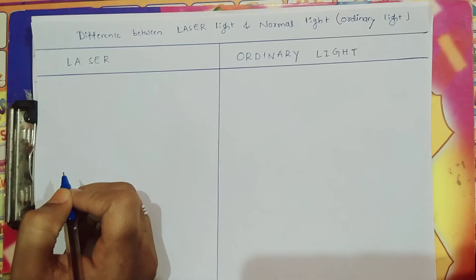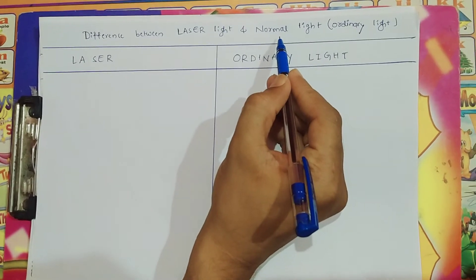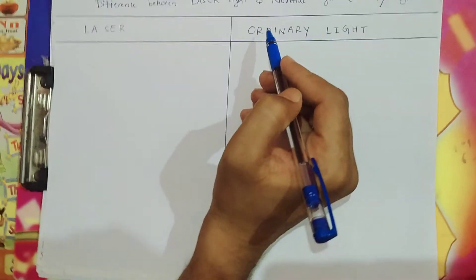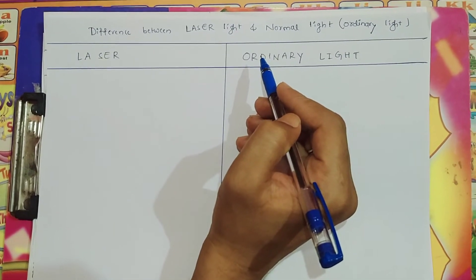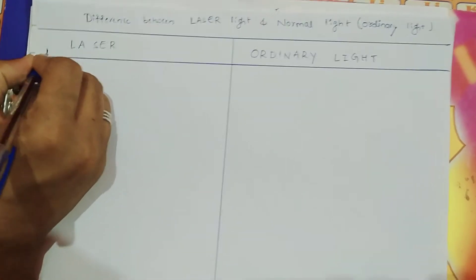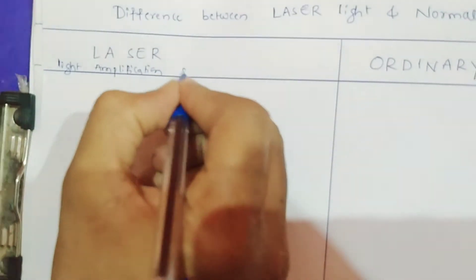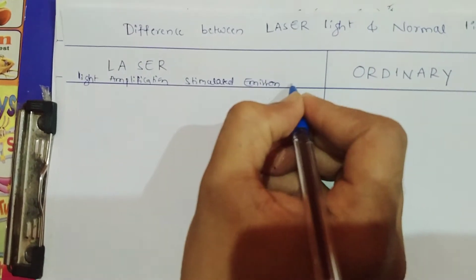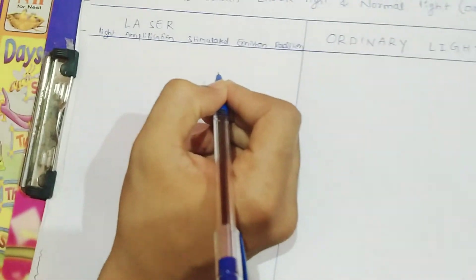Hello and welcome to my YouTube channel Connect to Physics. Today we are going to discuss the difference between laser light and normal light, also called ordinary light. In the first part we discussed the abbreviation and definition of laser. As we know, laser means Light Amplification by Stimulated Emission of Radiation — this is the full form of laser.